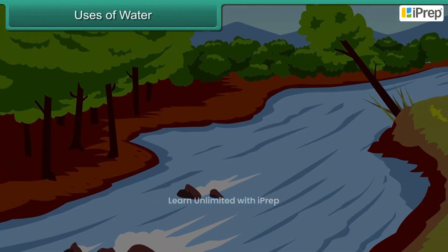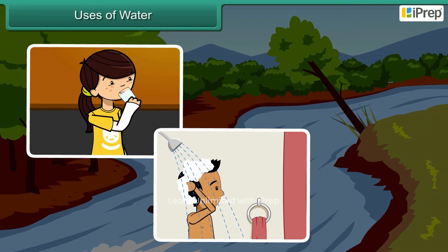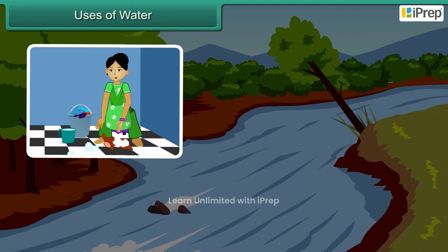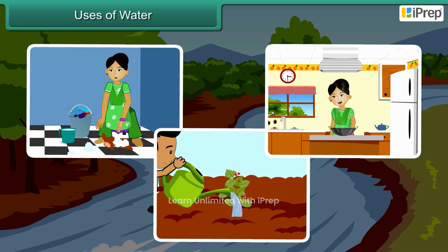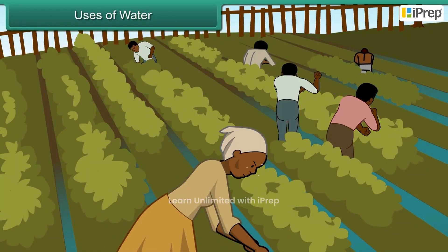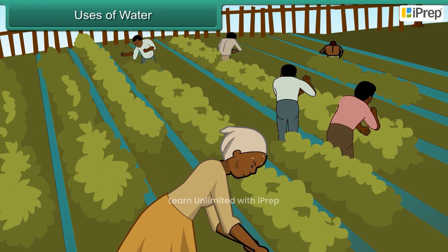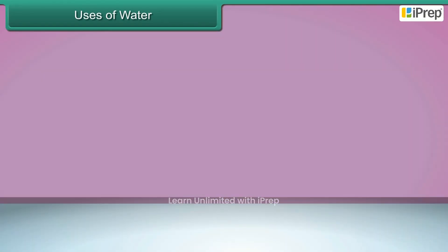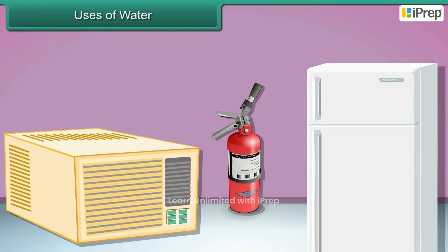We use water for drinking, bathing, cleaning, washing, watering the plants and cooking. We also use it to irrigate crops and lawns, to clean streets and to operate air conditioning units and heating systems.